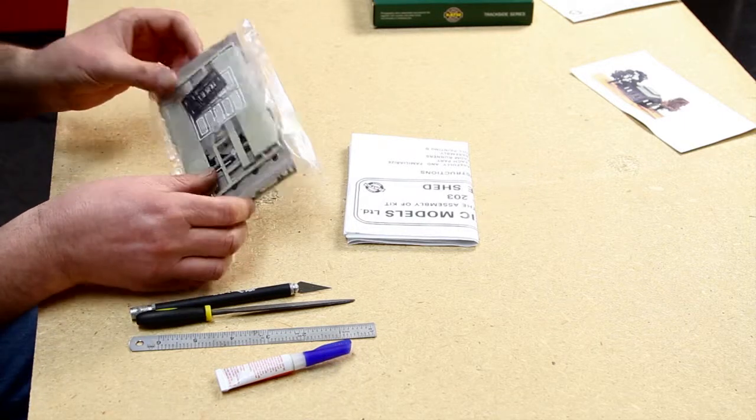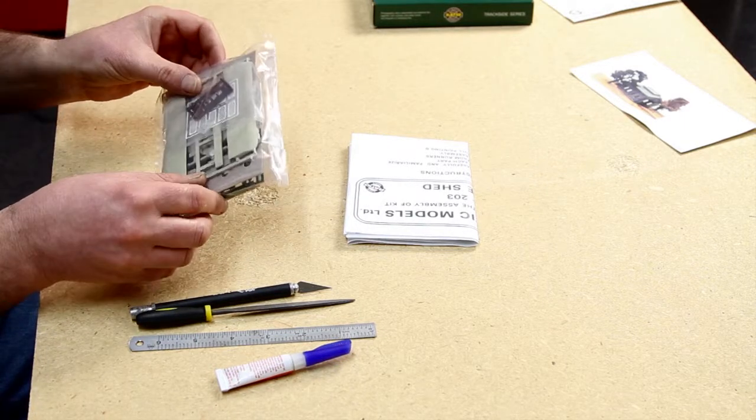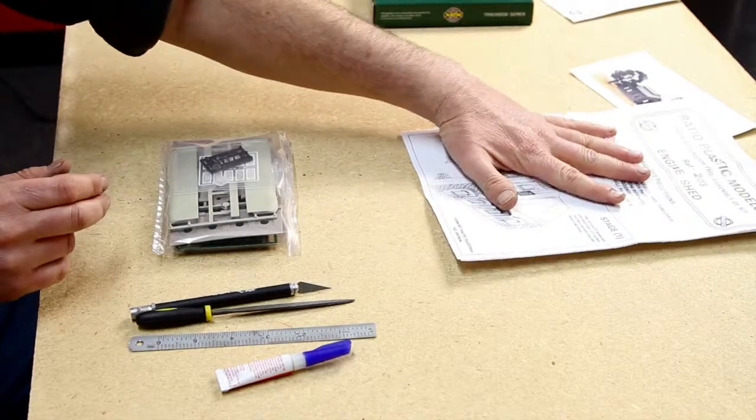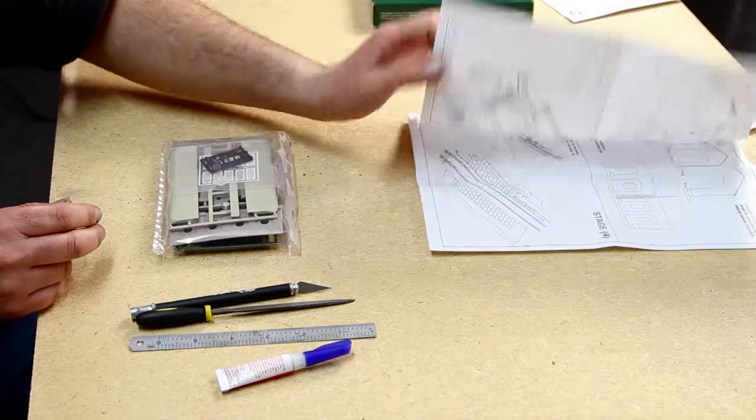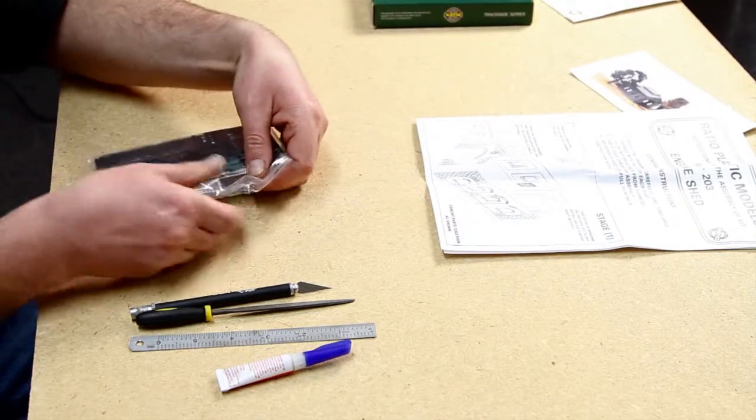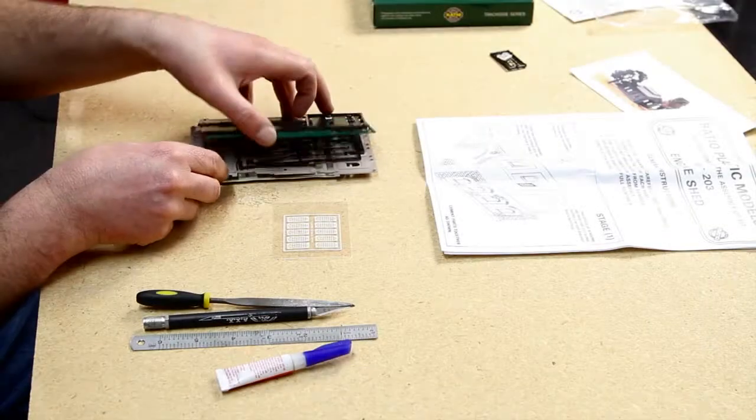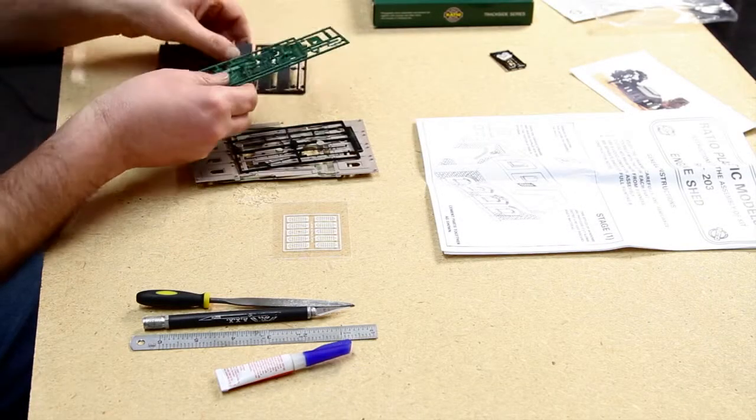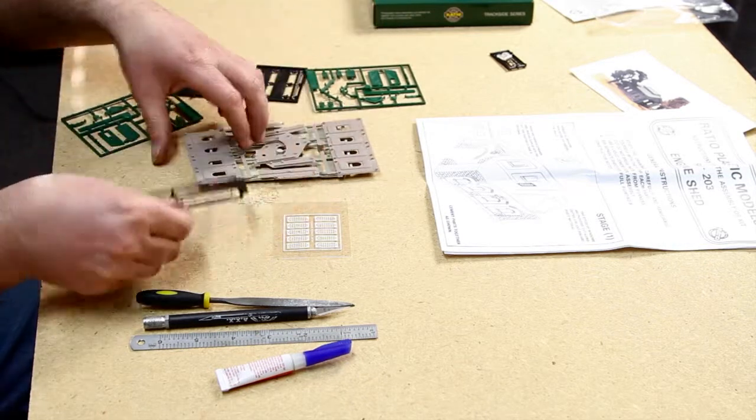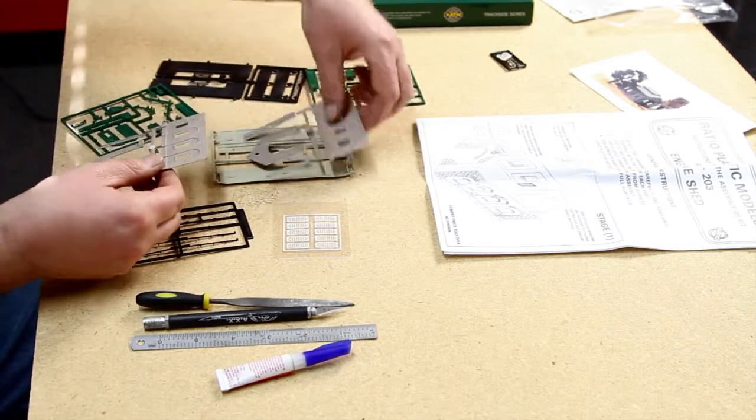In the kit it comes all nicely packed in the plastic bag with your instructions. First thing you need to do is open up your instructions and then your parts and identify each of your parts. Once you have got all your parts out of the little plastic bag, you can quickly identify them all.